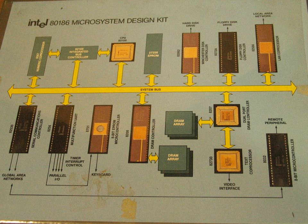The 8080 System Design Kit of 1975 provided a training and prototype vehicle for evaluation of the 8080 Microcomputer System, clocked at 0.5 MHz. The SDK80 allowed interface to an existing application or custom interface development. A monitor ROM was provided. RAM: 256 bytes expandable to 1 KB.